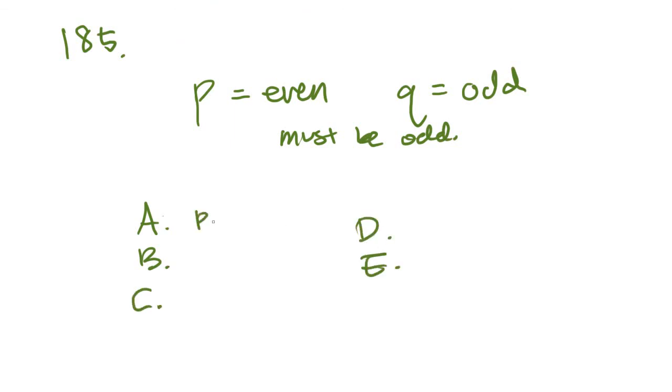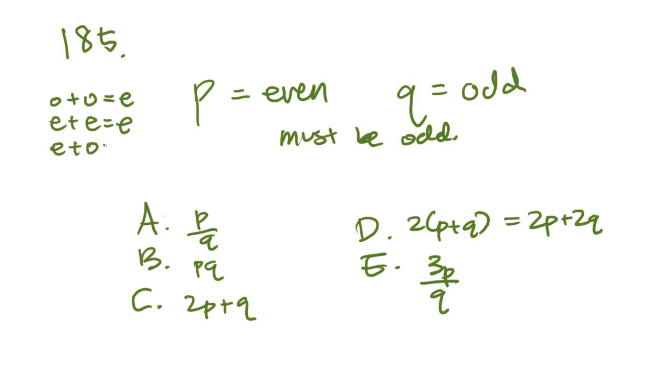185. If P is an even integer and Q is odd, so P is even and Q is odd, which of the following must be odd? It tells us A, B, C, D, and E. A is P over Q, B is PQ, C is 2P plus Q, D is 2 times P plus Q, I'll just rewrite that as 2P plus 2Q, and E is 3P over Q. Well, you should know your number properties. In terms of addition, we know that an odd plus an odd is going to be an even, an even plus an even is going to be an even, an even plus an odd is going to be an odd. For example, if 1 plus 1 equals 2, which is even, but 2 plus 1 is going to be 3, which is odd. So you should remember this.